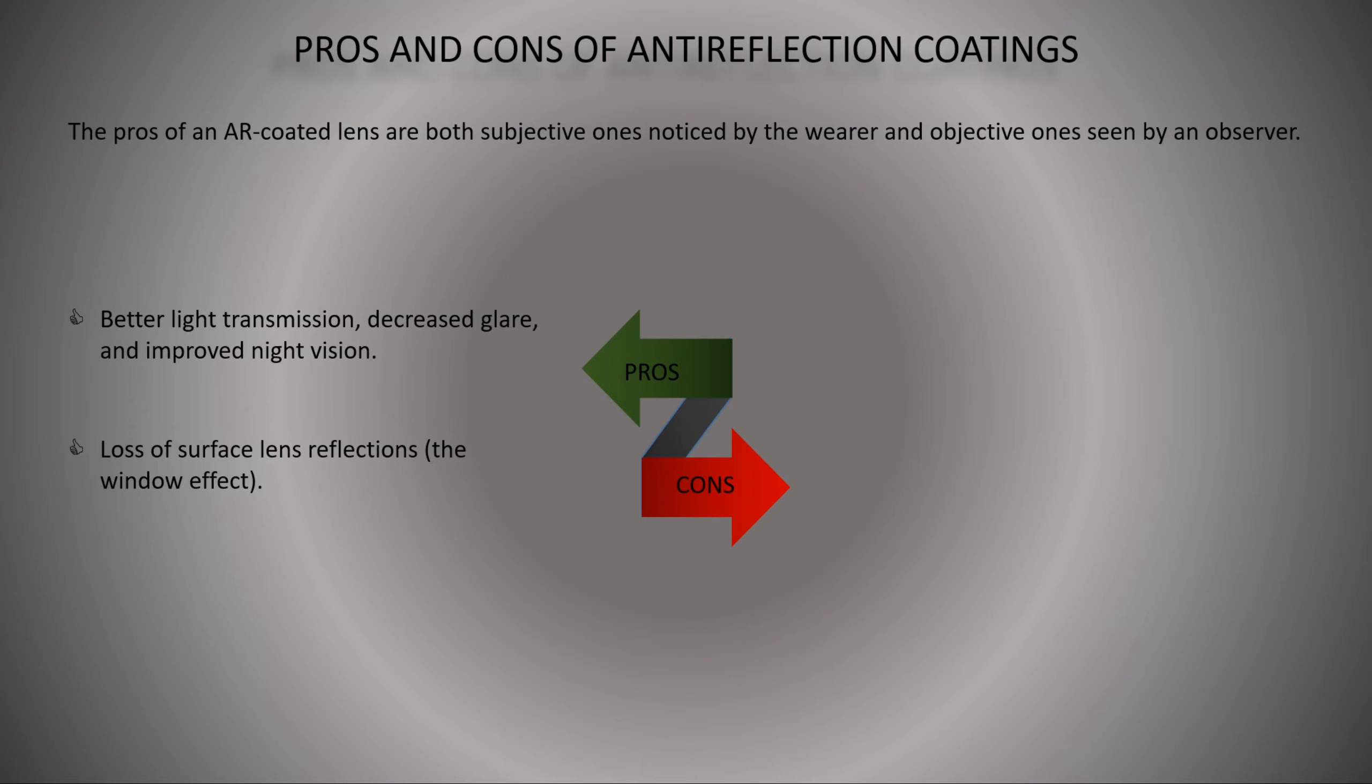Objective advantages include the loss of surface reflections, the window effect. Without lens reflections, the wearer's eyes become more visible. Because edge reflections are reduced and the lens appears less visible, AR coatings make thick lenses appear thinner.